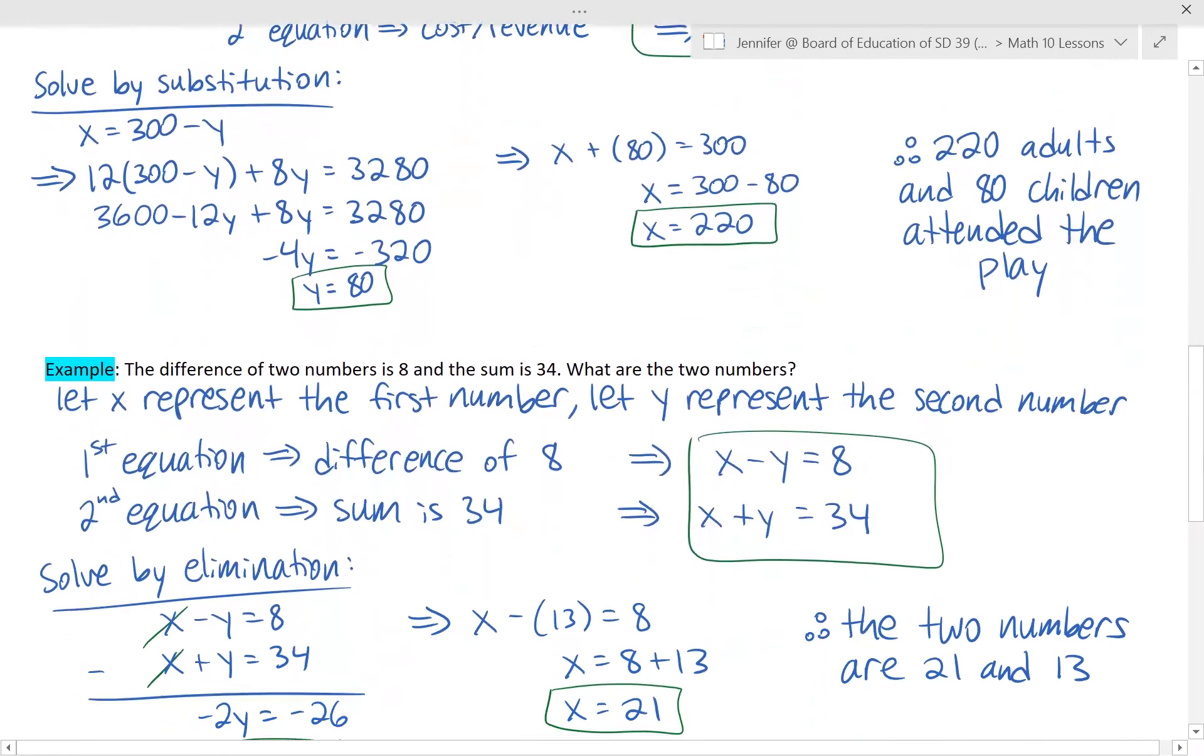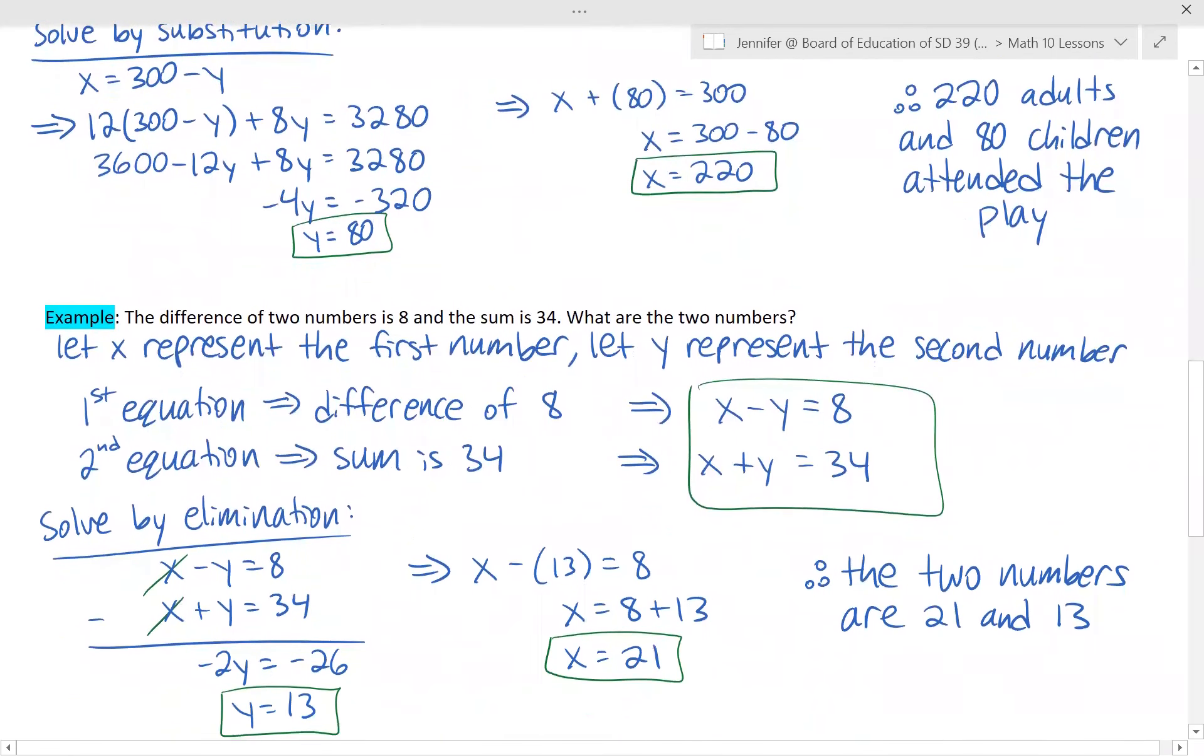Here's another type of problem you might see. The difference of two numbers is 8, and the sum is 34. What are the two numbers? So it sounds a little bit simpler. The actual algebra to solve this is a lot simpler. But again, you have to be able to set up the equations to represent this. So what are our two unknowns? They're whatever the two numbers are. So let's say X is the first one, and Y represents the second number.